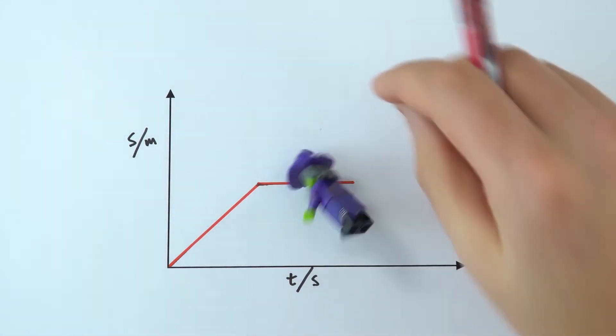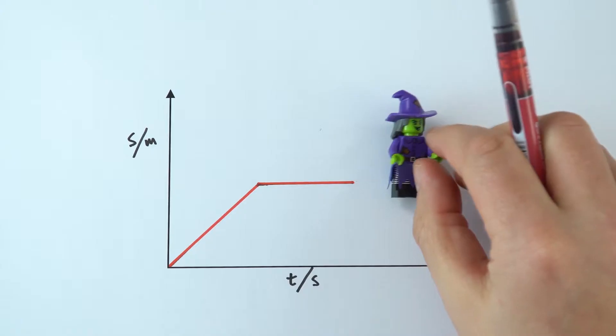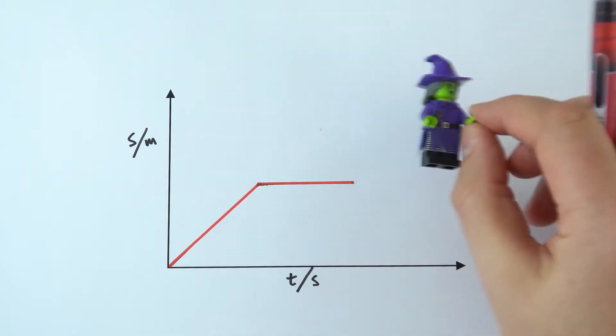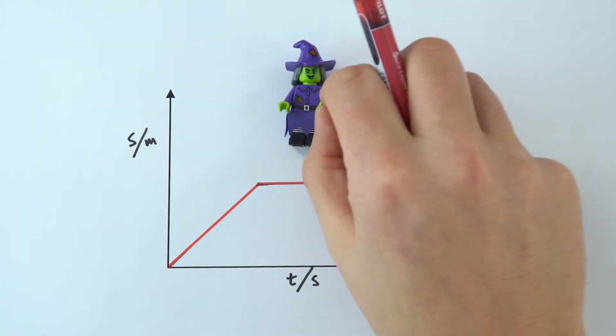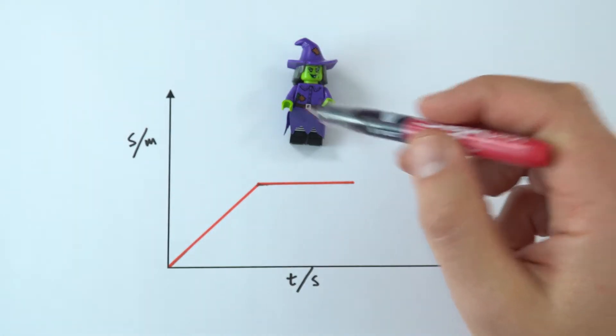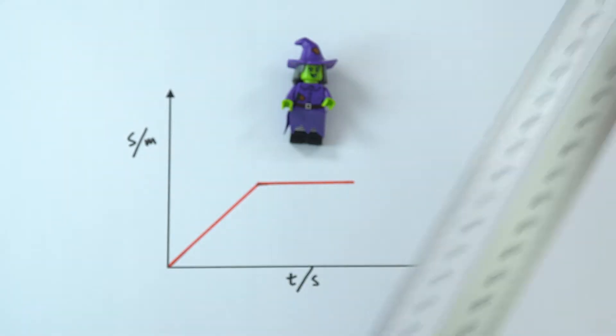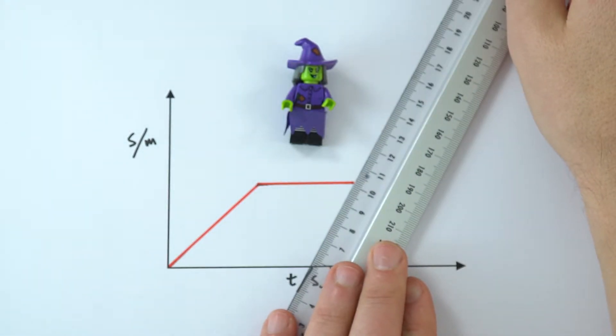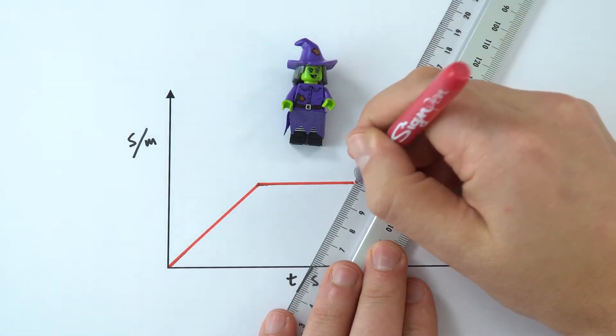And in this case, maybe the witch gets a bit worried about why you're actually watching her, and maybe she runs off or she flies off on a broom or something like that. Now that means in one second, she's going to be moving more metres than she was initially. And if we were to complete this on the graph, we'd get a graph that looks like this.